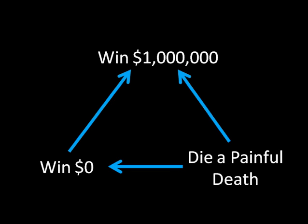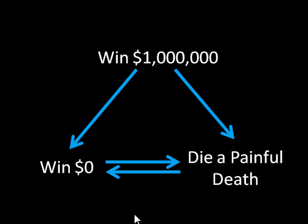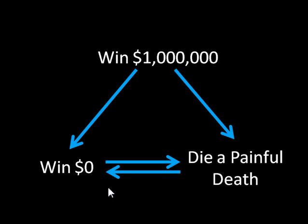One other thing we need to cover is indifference. These double arrows — one pointing from winning zero to dying a painful death, and the other from dying a painful death to winning zero — form an equal sign if you look at the lines without the tips. So this is like saying you're equally indifferent between winning zero dollars and dying a painful death. That's how I remember those sorts of things.